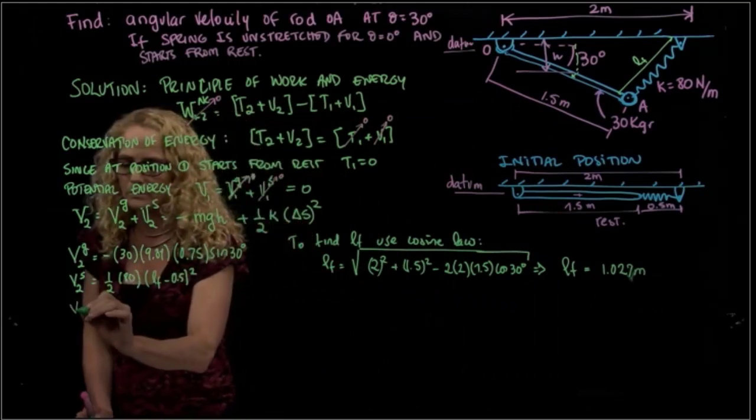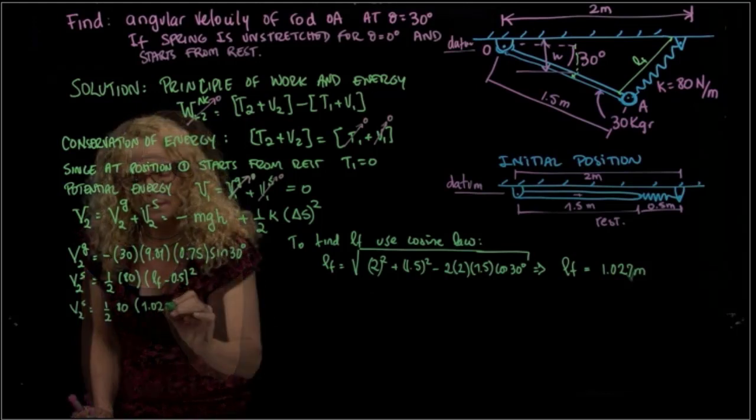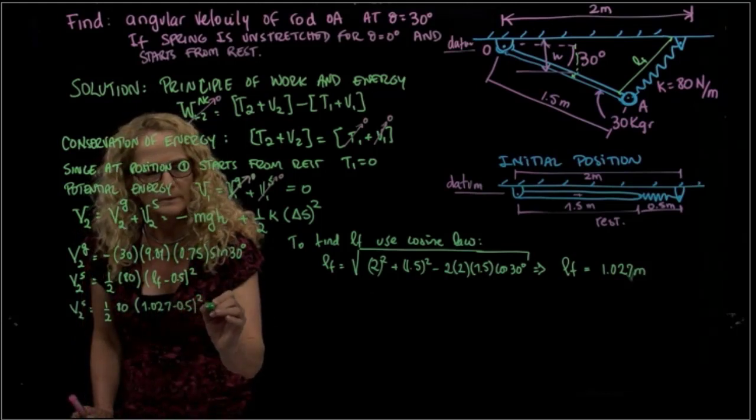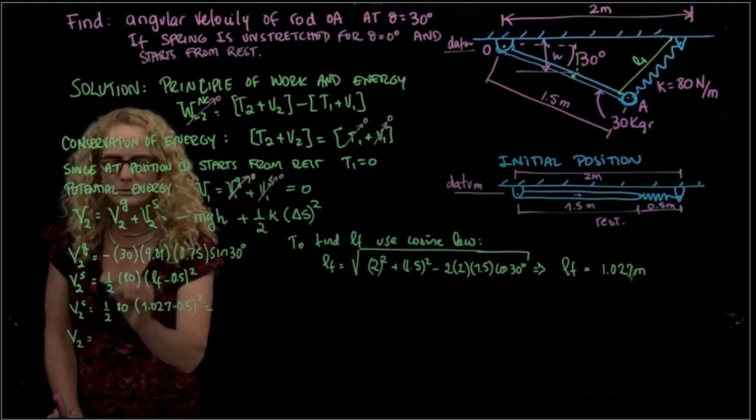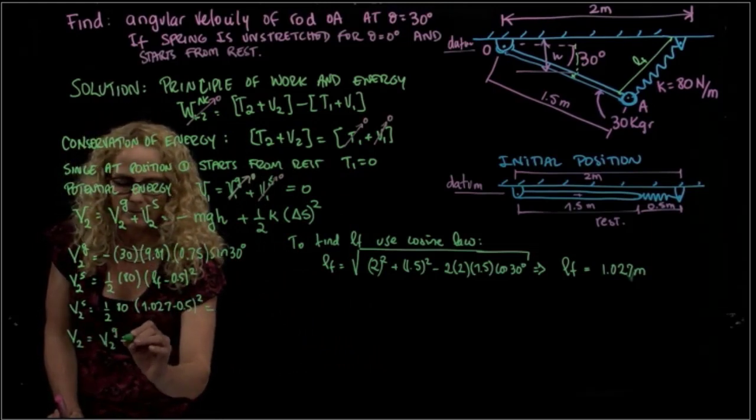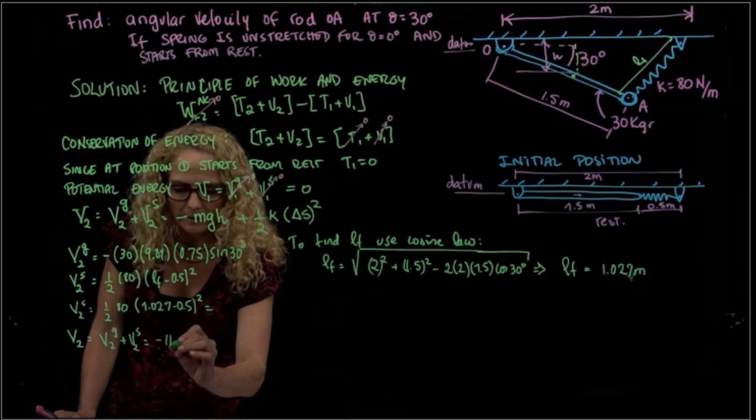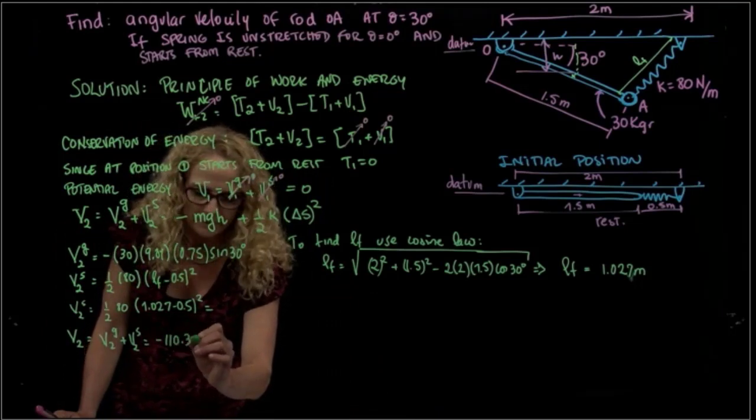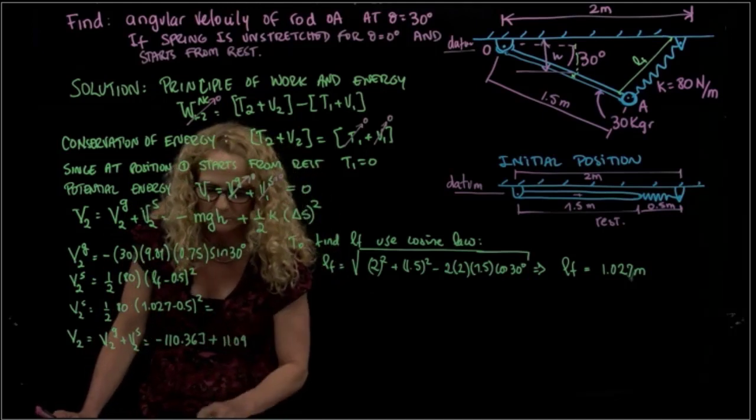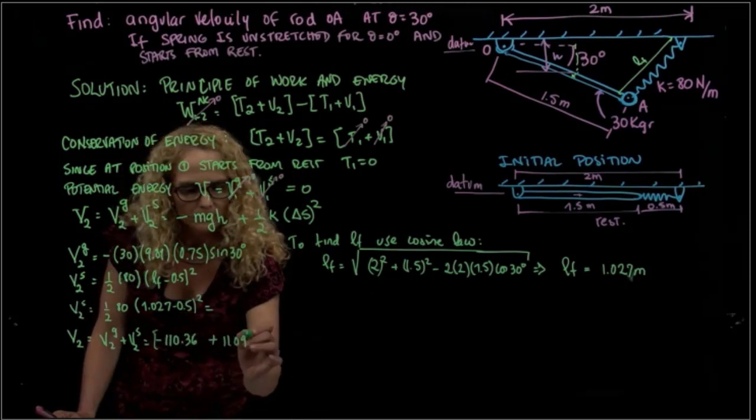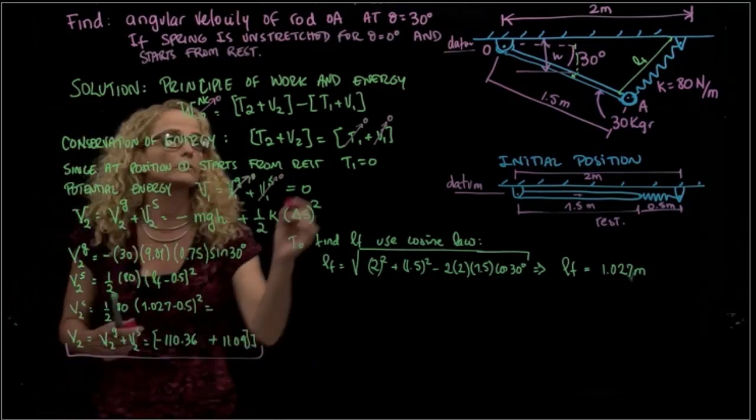So finally we can say that the V2 is equal 1/2 times 80, 1.027 minus 0.5 squared. And I have those two values right here. This one at the end, V2 equals V2G plus V2S, and this is equal to that value right here, equals negative 110.36 joules, and this one here is 11.09 joules. So that's the first value that we will use.